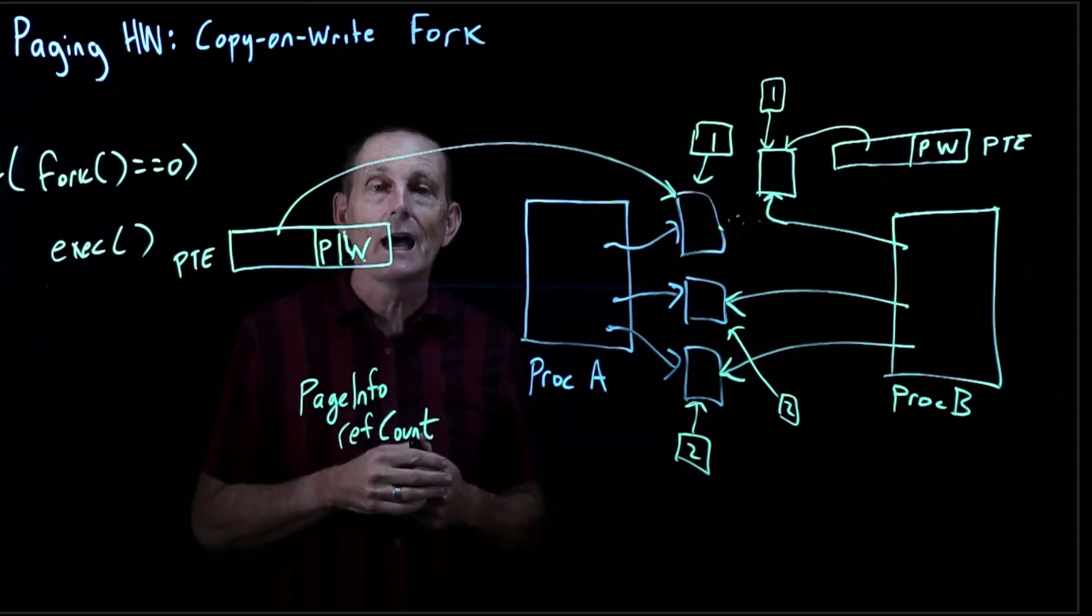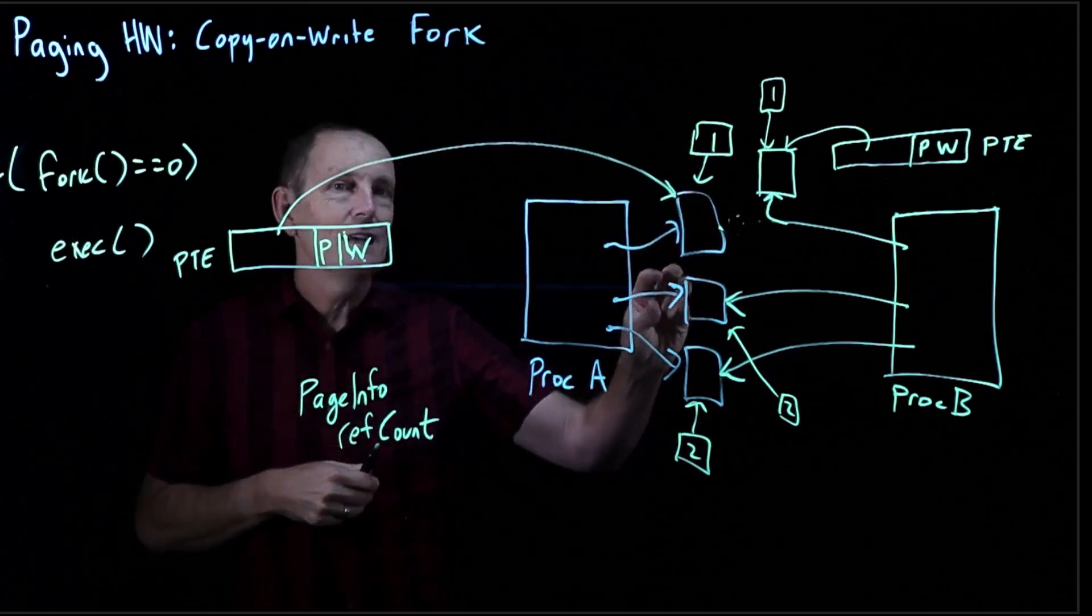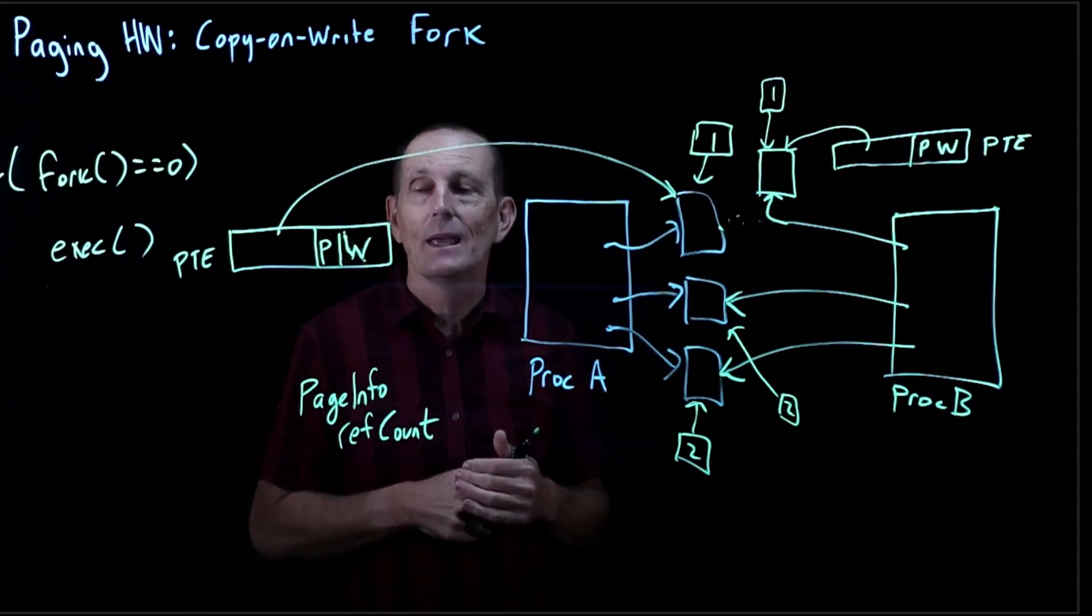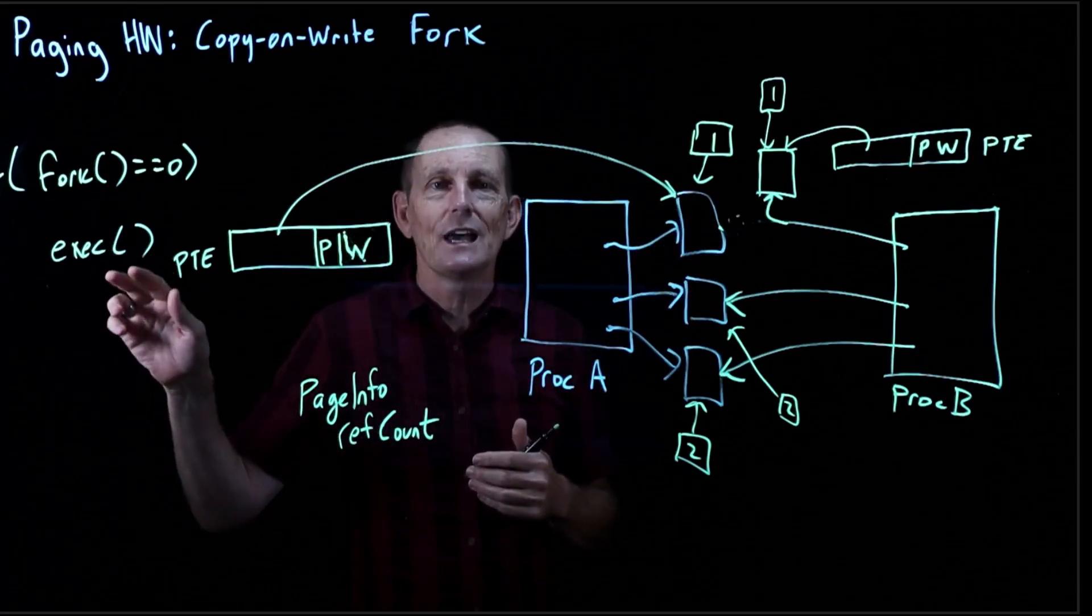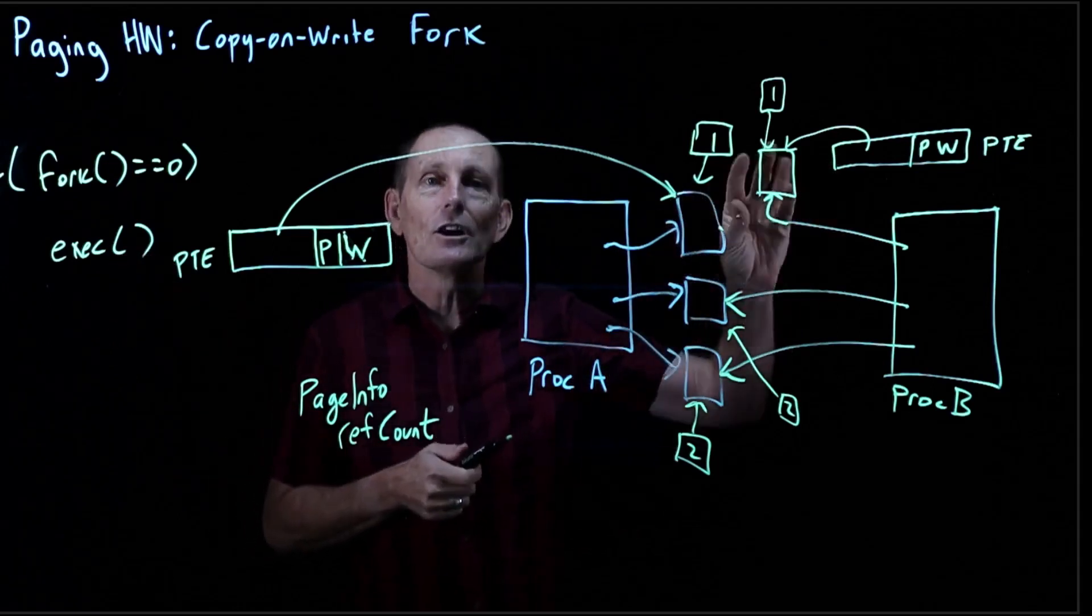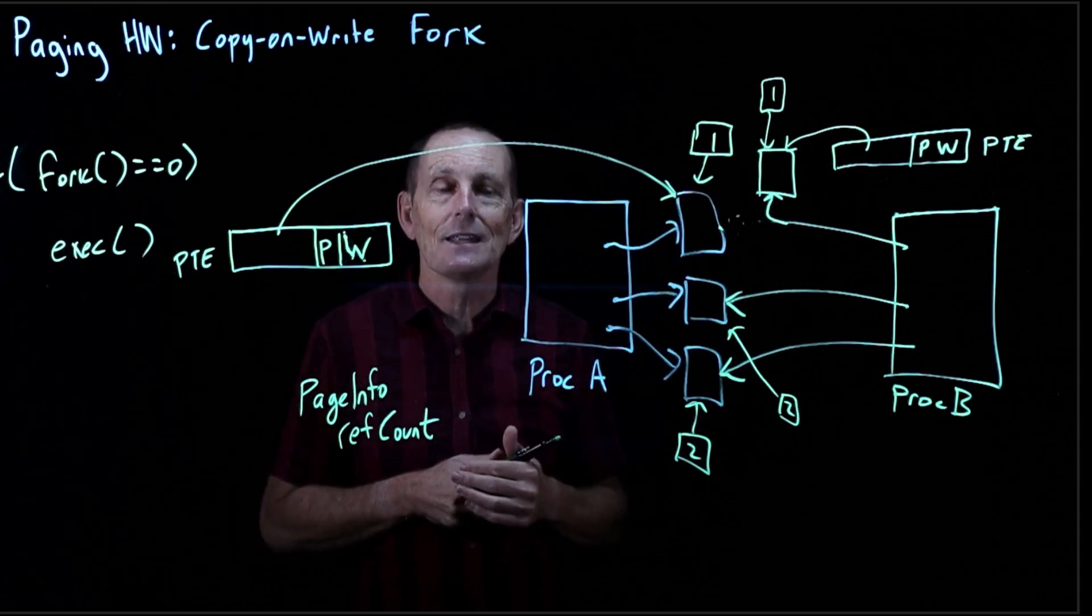So one of these pages is going to be the stack, or at least the current top of stack. And so when we do an exec, the child process will be writing to the stack. So we know that's going to cause a copy-on-write, at least to the stack.